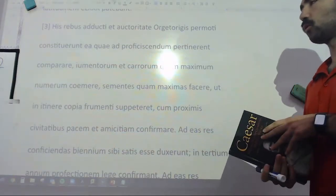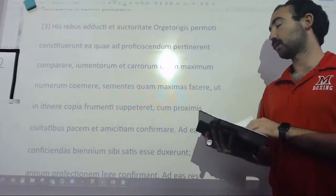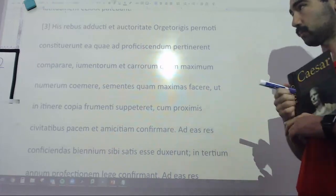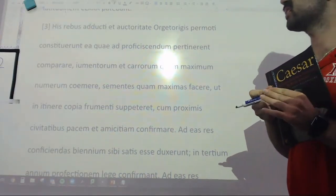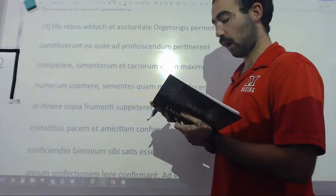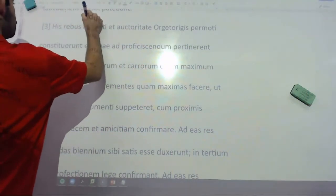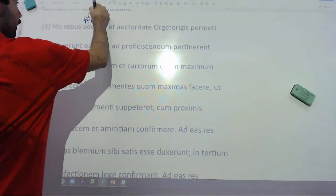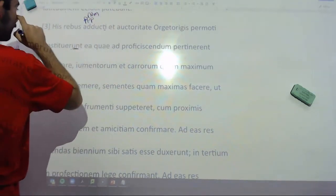Salvete, discipuli. I'm going to go over Book 1, Chapter 3 of Caesar's De Bello Gallico together with you. Starting off with his rebus adducti. Adducti is a PPP, I see in the book, adduco, which is to influence or lead to. This PPP is nominative and it's plural because I see consiturerunt with NT is plural.